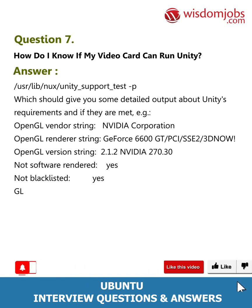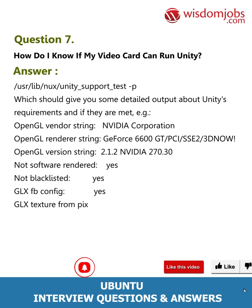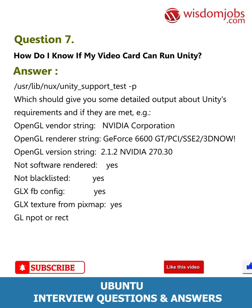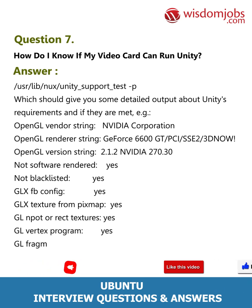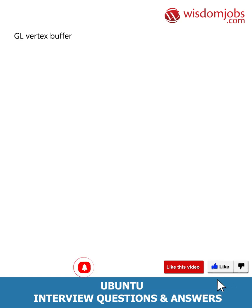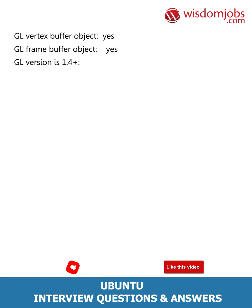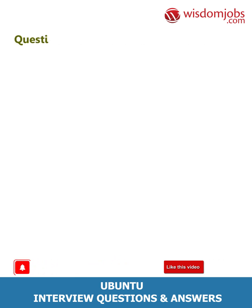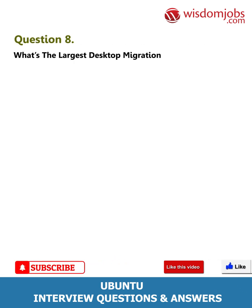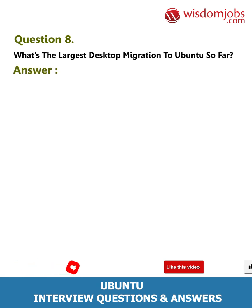The output continues: Not software rendered: yes; Not blacklisted: yes; GLX fbconfig: yes; GLX texture from pixmap: yes; GL non-power-of-two textures: yes; GL vertex program: yes; GL fragment program: yes; GL vertex buffer object: yes; GL framebuffer object: yes; GL version is 1.4+: yes; Unity supported: yes.